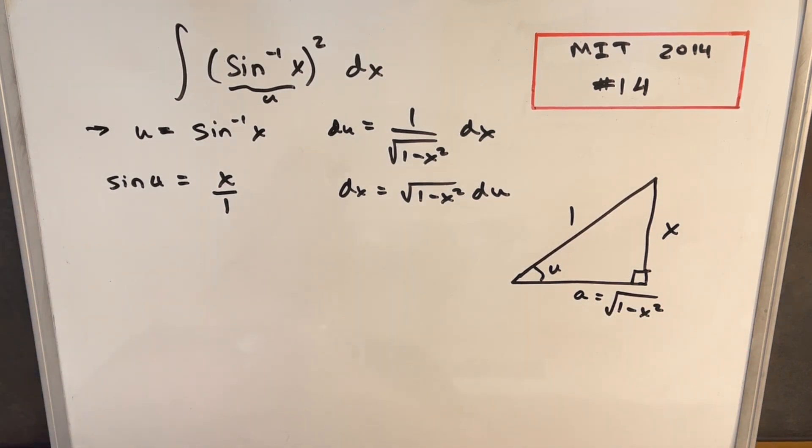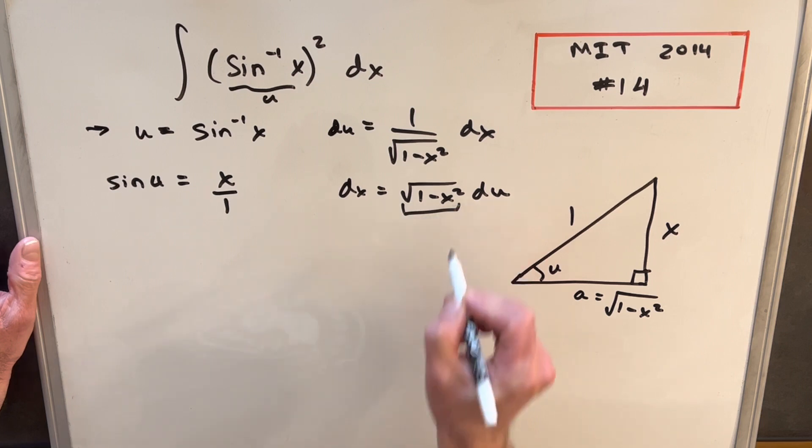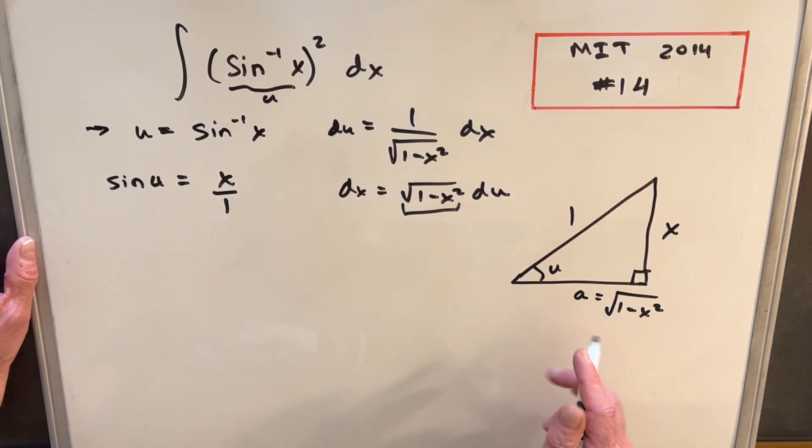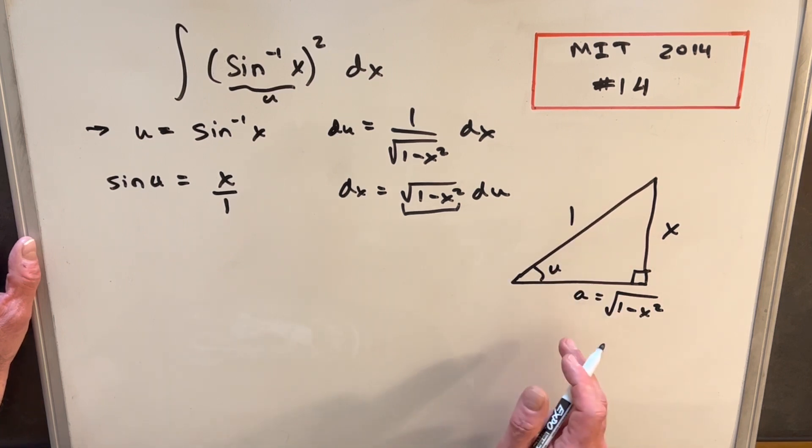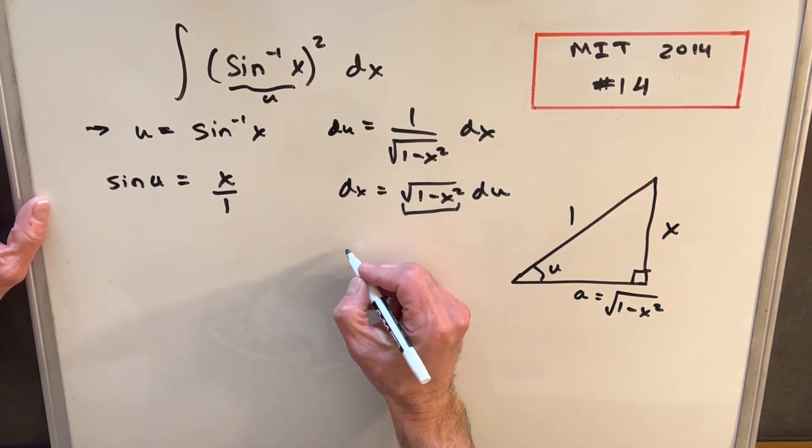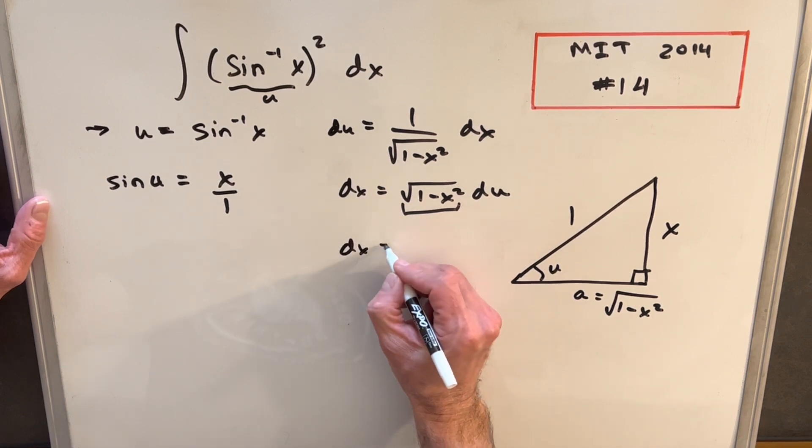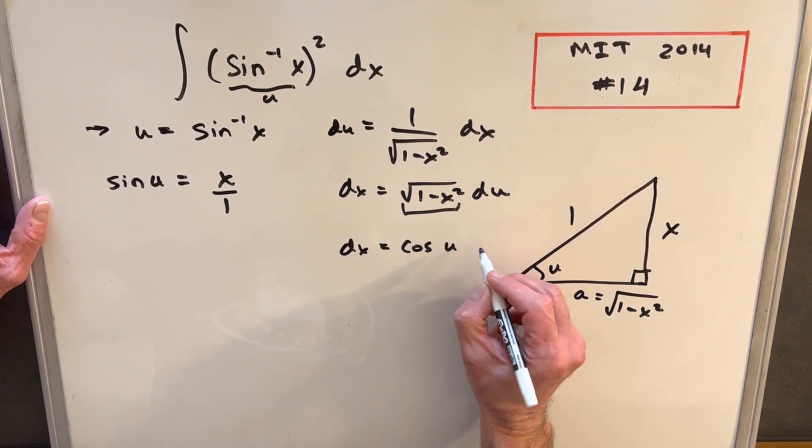And then back to what we're trying to do, we want to find this value of square root of 1 minus x squared. Well it turns out that cosine of u is adjacent over hypotenuse, so cosine of u is square root of 1 minus x squared. And from that we can write our dx as cosine of u du.